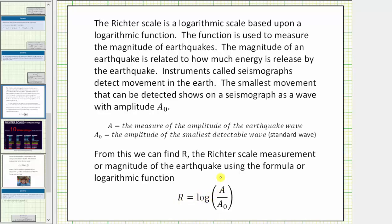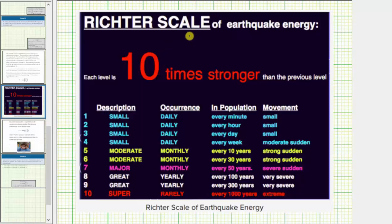Before going back to our question, let's look at a table. Because the Richter scale is based upon the common log or log base 10, every level in the Richter scale is 10 times stronger than the previous level.